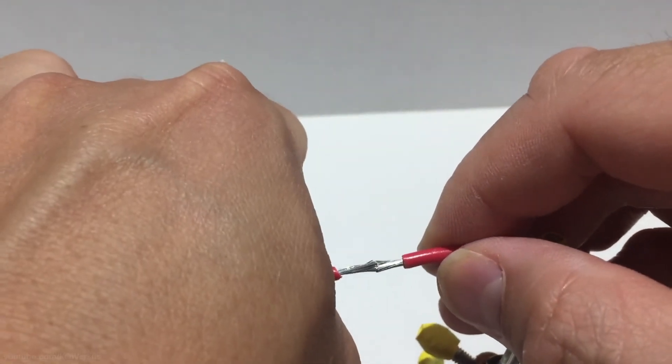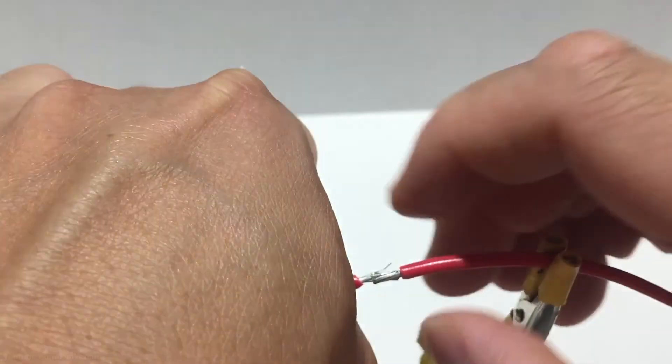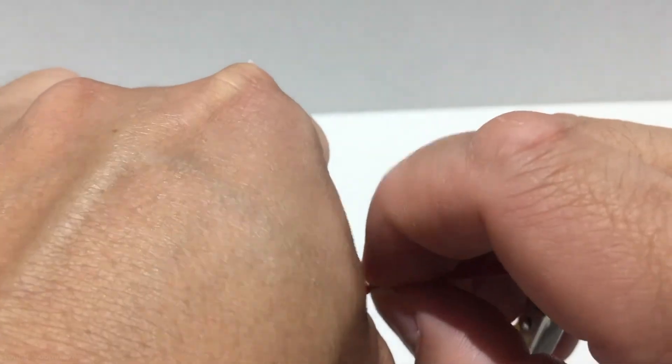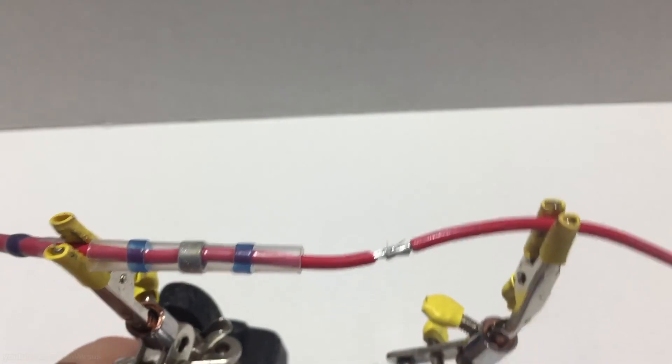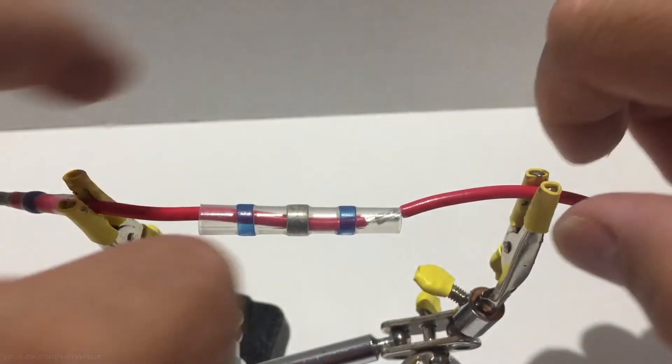In this video I'll quickly show you how to use them. Just remove a bit of the plastic from both ends of the wires you plan to splice together. Then find an appropriate size sleeve and insert it so that the part that has the soldering goes around the exposed wires.